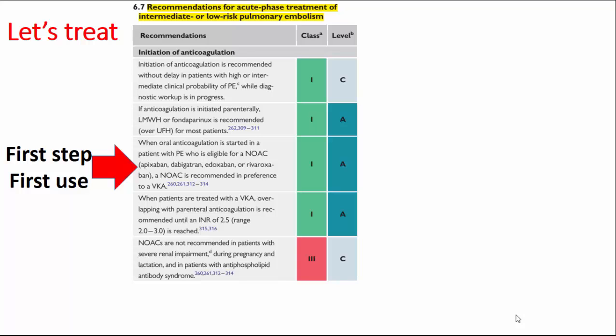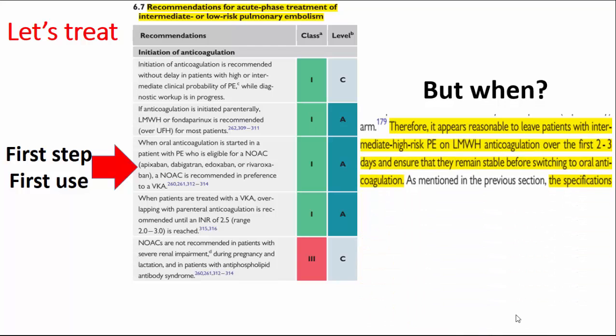NOACs are contraindicated in pregnant females, lactating females, patients with antiphospholipid antibody syndrome, and those with severe renal impairment (creatinine clearance less than 15 mL/min). Regarding when to start NOACs in this patient — not immediately. Trials on thrombolytic therapy showed intermediate-high risk patients can develop hemodynamic instability two to three days after presentation, so it is wise to wait two to three days on parenteral LMWH before transitioning to oral anticoagulation.